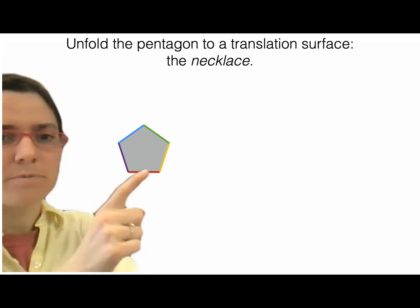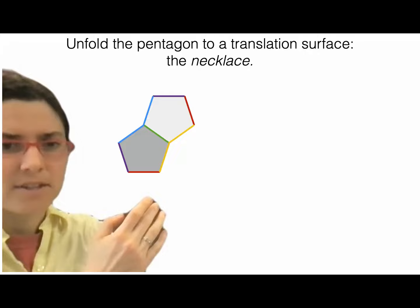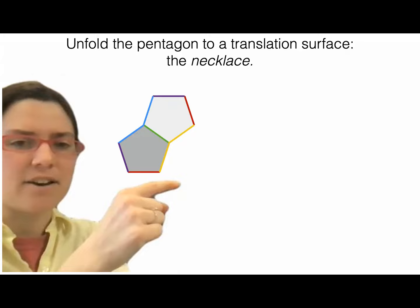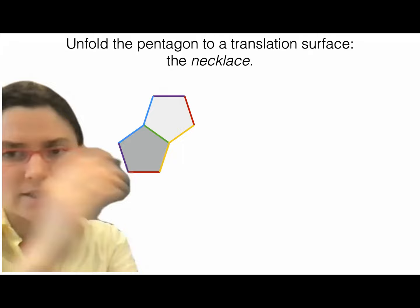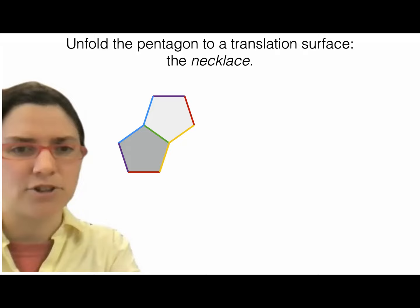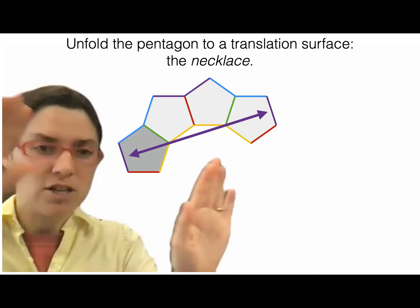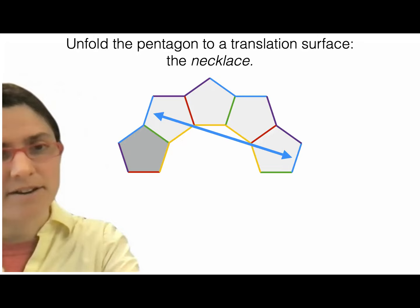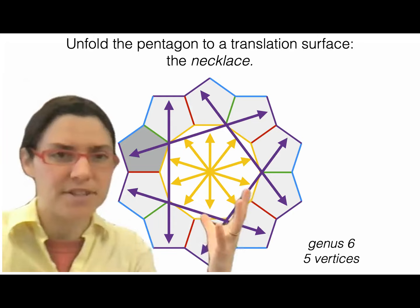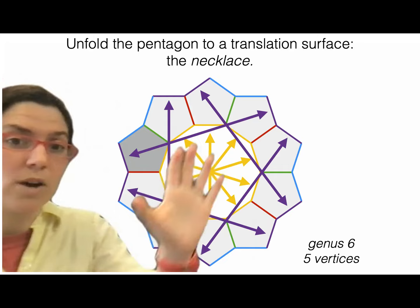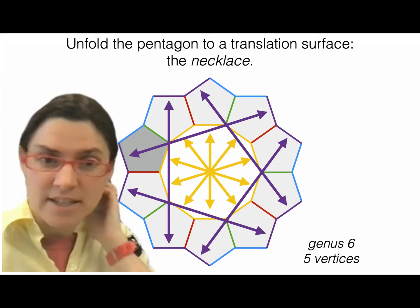This is a pentagonal billiard table. I'm going to unfold it across its edges. The dream is to have each edge paired with a parallel edge of the same color, oppositely oriented — meaning the polygon is on the opposite side. After unfolding several copies, we find matching parallel pairs: purple with purple, and so on. Continuing all the way around, everything is paired up. We get a surface made of 10 pentagons with opposite edges identified.